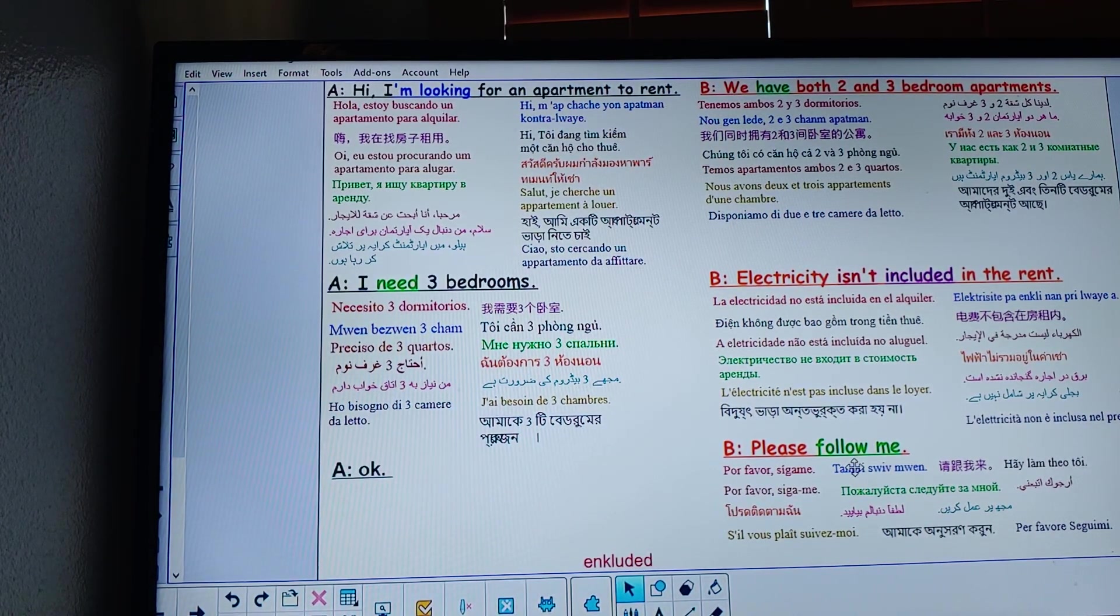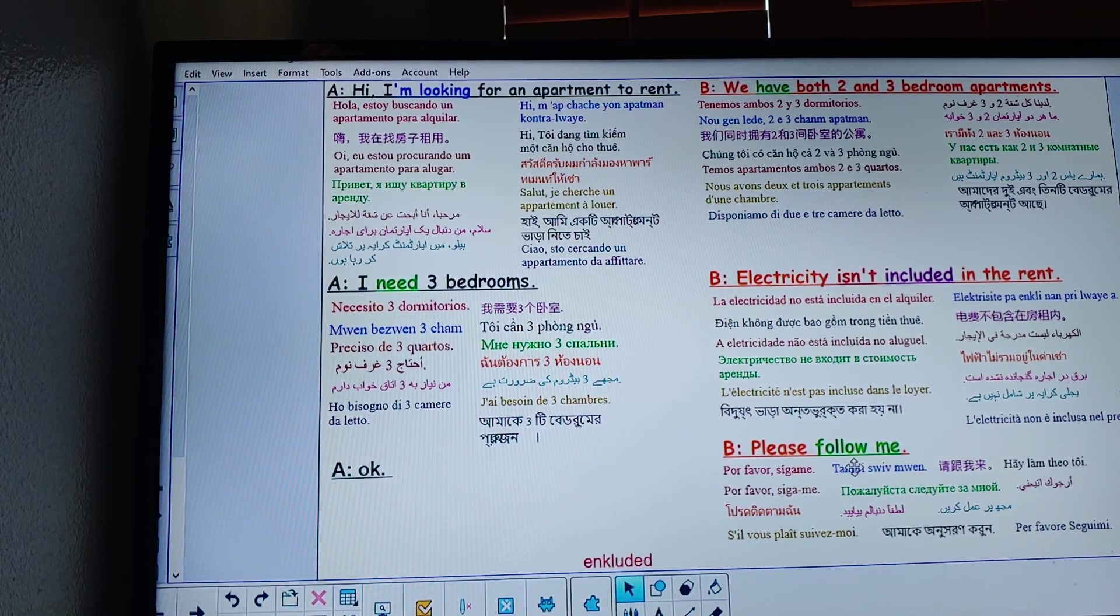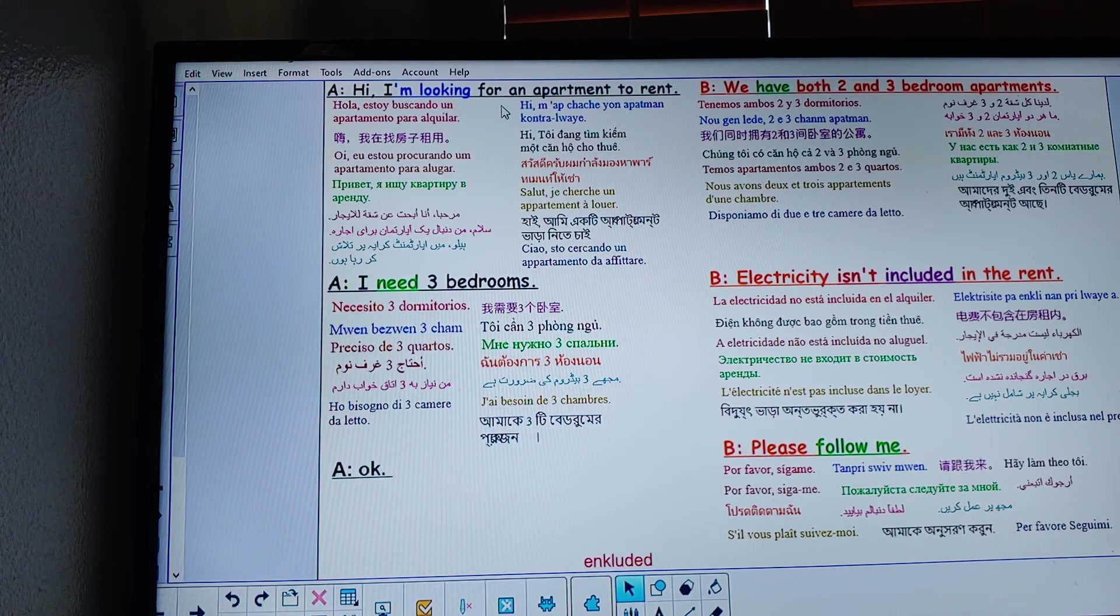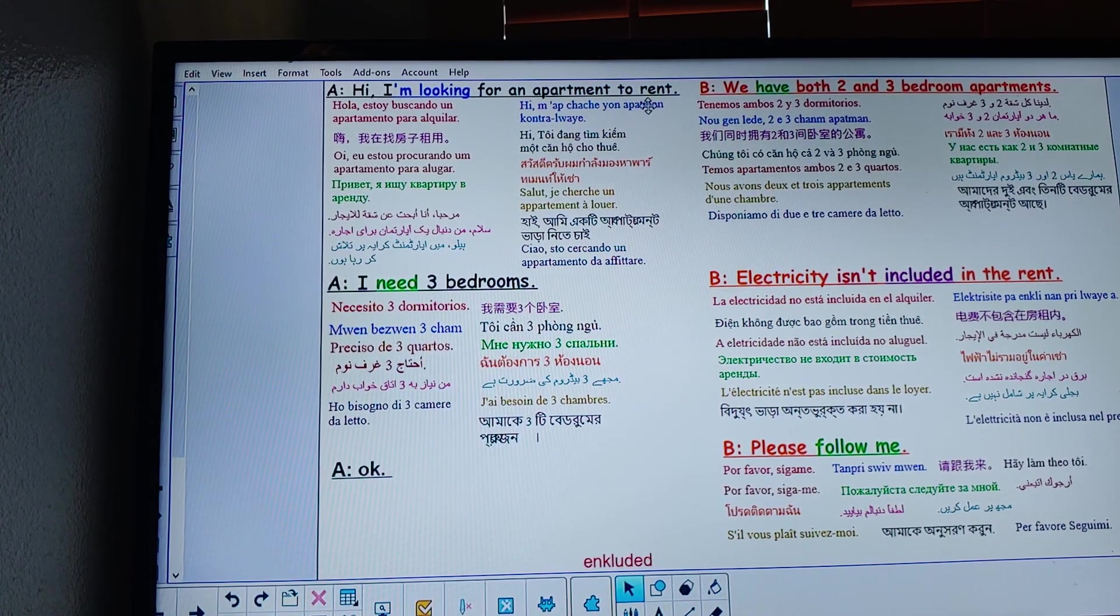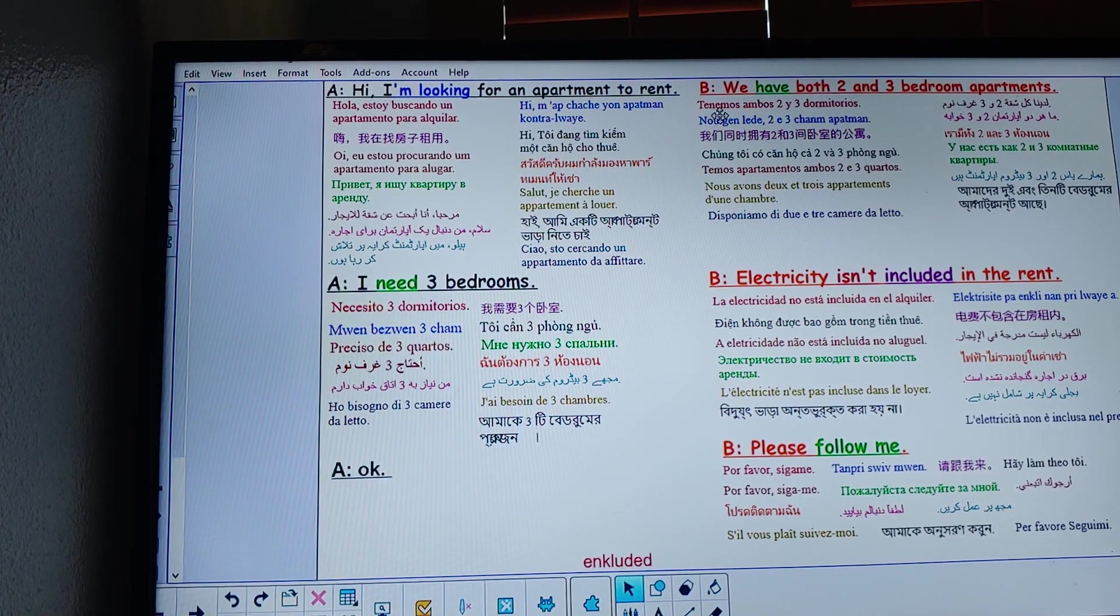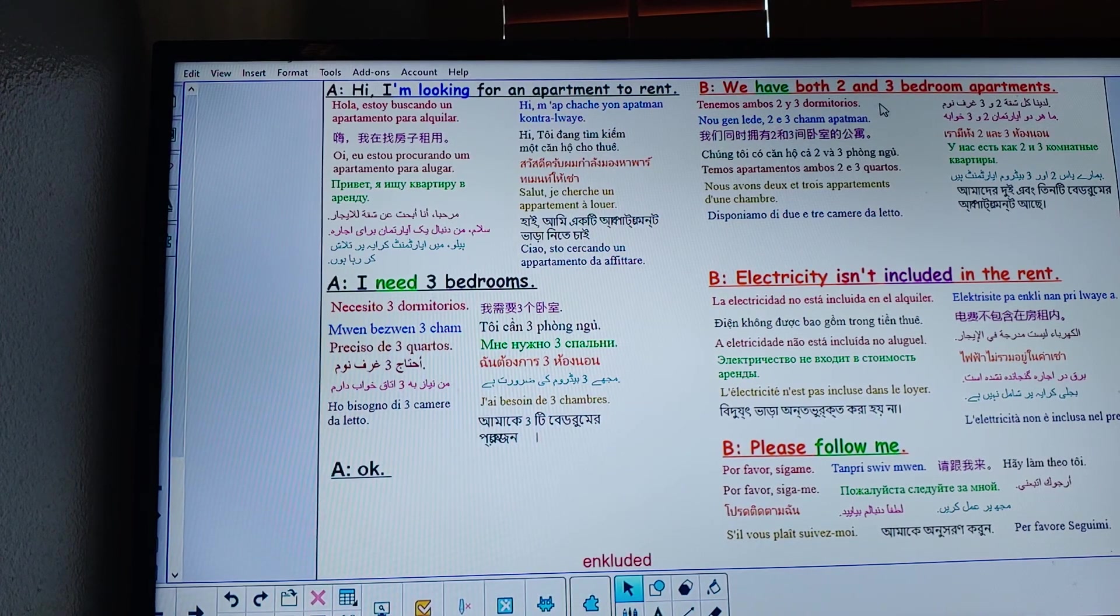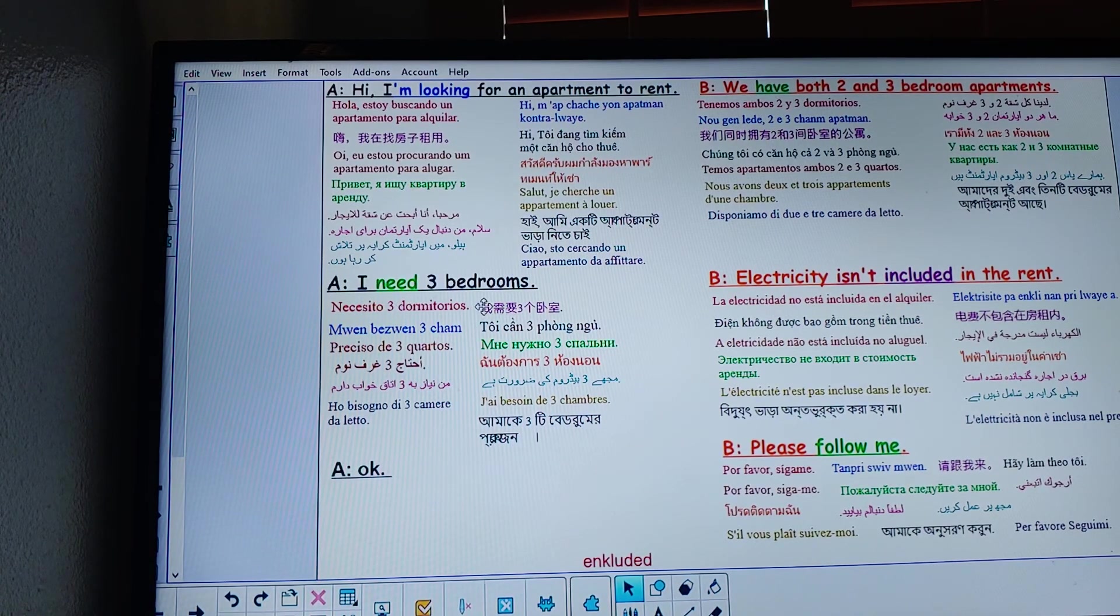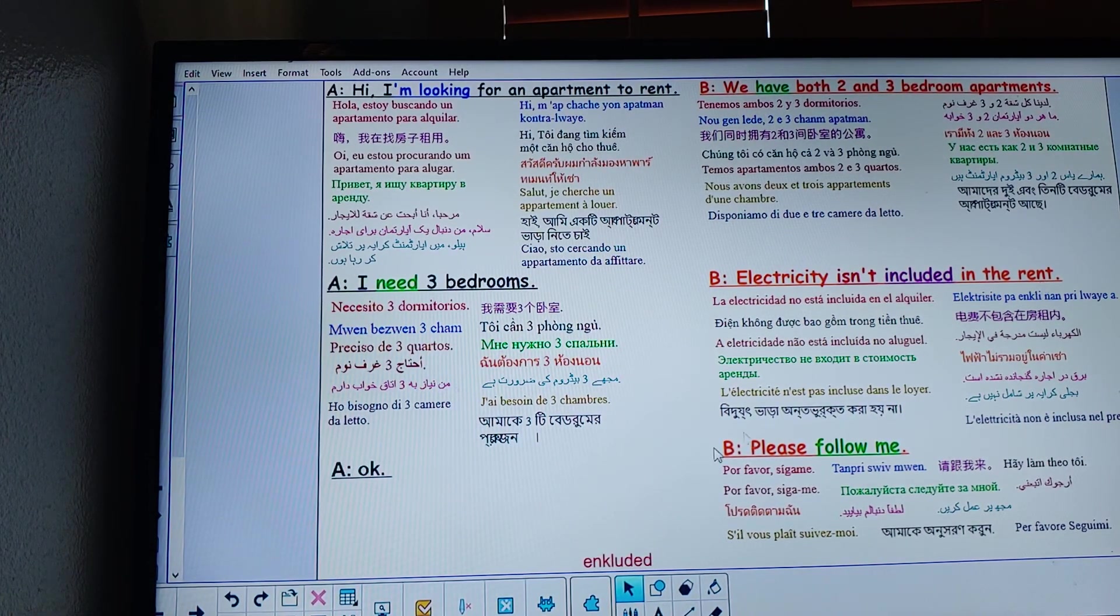Follow me. Or in Creole, follow me. So let's go slowly. Hi, I'm looking for an apartment to rent. We have both two and three bedroom apartments. I need three bedrooms. Electricity isn't included in the rent. Okay.